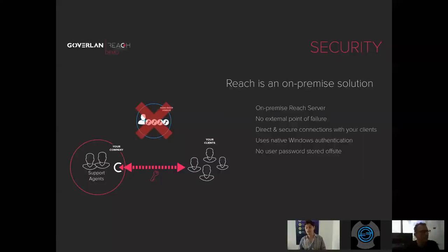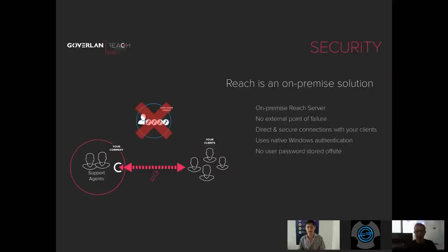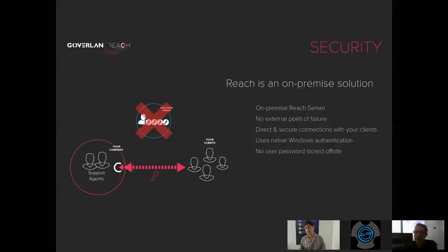We want a really wide threat canvas. If you look at other solutions, if you want to attack one of their customers, you know exactly where to go — it's at their service provider's servers. But here, customer A has no effect on customer B. There are also direct and secure connections with your clients: I cannot do an unattended remote control session on a machine I don't have permissions for. We use native Windows authentication. Everything is encrypted and compressed — there's a new compression engine. Pascal was home on Comcast wireless consumer internet and I was watching YouTube videos in HD with sound. And there's no user password stored off-site.